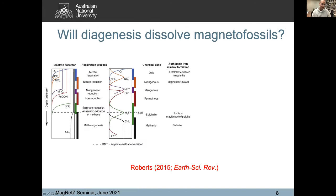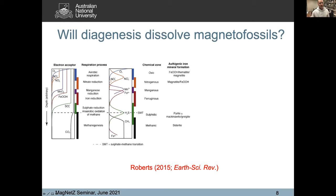Here is the standard diagenetic zonation in sediments. The depth is arbitrary because it could be tens or hundreds of meters thick, or it could be millimeters thick, depending on organic carbon flux. You start with degrading organic matter using oxygen, and when all the oxygen is consumed, you start to reduce the next most readily usable species: nitrate, then manganese oxides, then iron oxides, then sulfide, then methane. You get these ranges of diagenetic zones where different minerals form and dissolve.